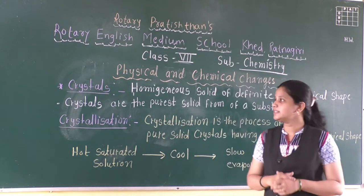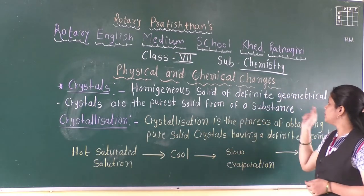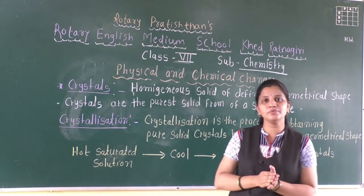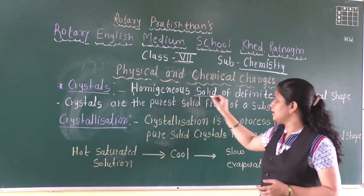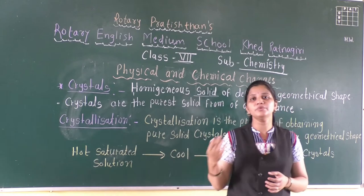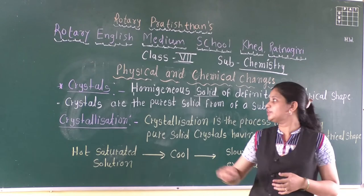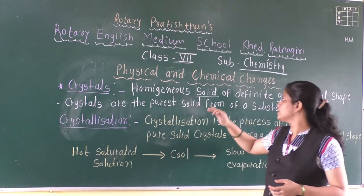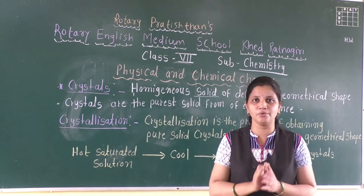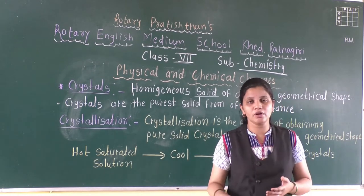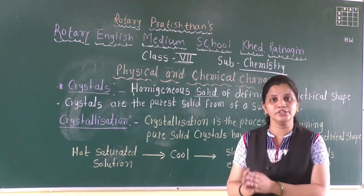So first we will see what is a crystal. Crystals means what? It is a homogeneous solid of definite geometrical shape. Crystals are in a solid state and homogeneous — meaning completely mixed with each other. So it is a homogeneous substance and a solid of definite geometrical shape. Common salt and sugar — they are having a particular shape, that is only a definite geometrical shape.